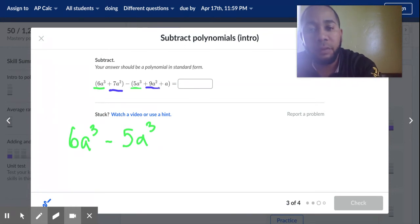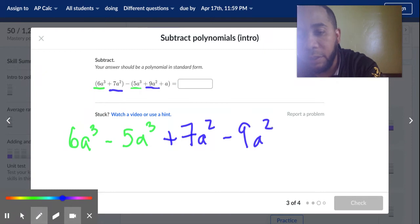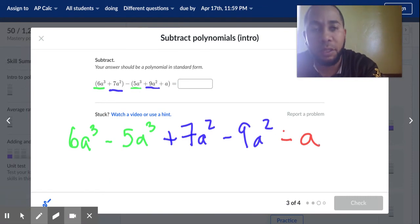So I actually have plus 7a squared minus 9a squared. And then finally I'll use red: minus a. That is that.